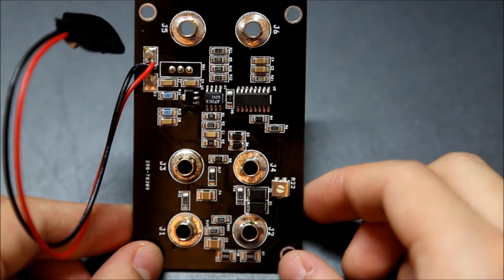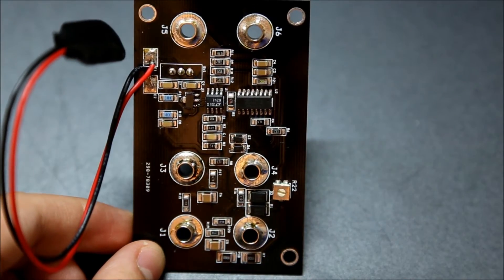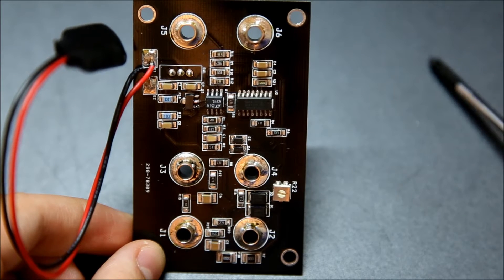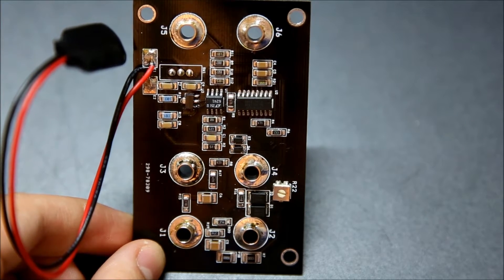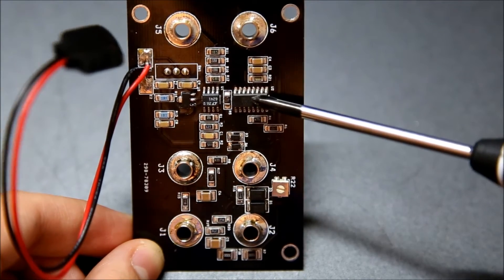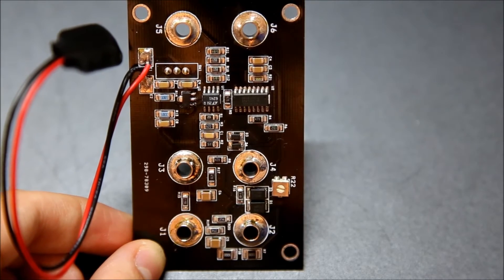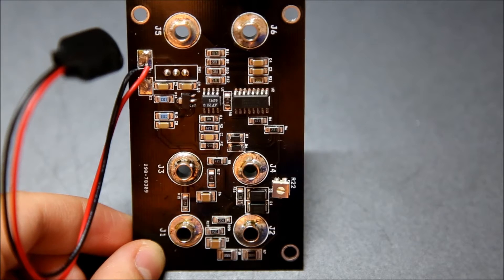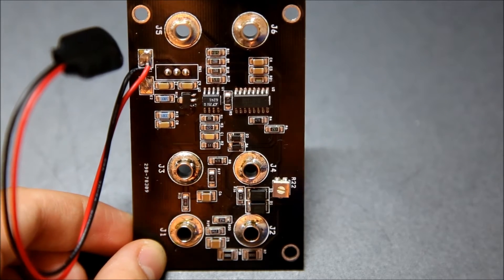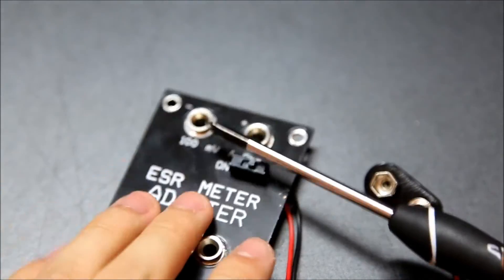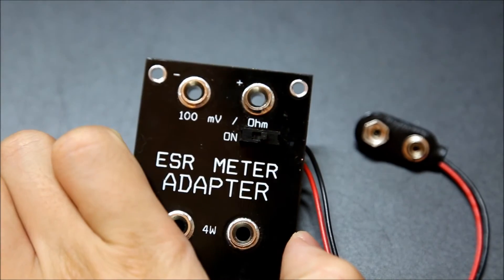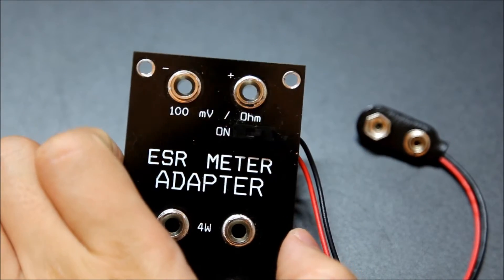So basically how these ESR meters work, this applies to any ESR meter, is it will generate an oscillating frequency. I believe this one is at around 100 kilohertz, and it's a square wave. And then the switch provides a current to the capacitor, and the operational amplifier plots the, it amplifies the Vout, and it returns the output voltage through these two terminals. So that's just basic of how this works. I'm not an expert, so don't quote me on that, but that is how I believe it basically works.